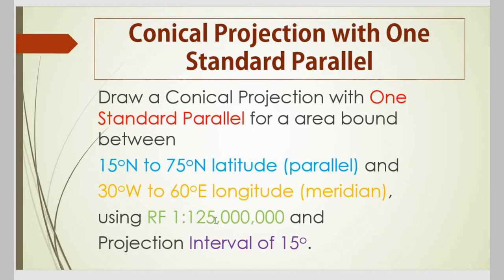The RF, or representative fraction, is a scale used to draw the model of earth on paper, because earth is so big we cannot draw it on a small paper — we need some scaling. That scaling is done by the RF or representative fraction. The next thing in the question is the projection interval, which is given as 15 degrees. We will discuss this interval in a while.